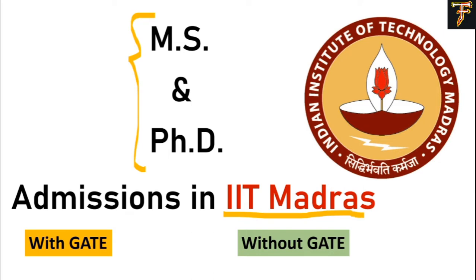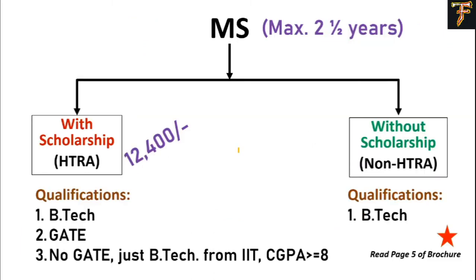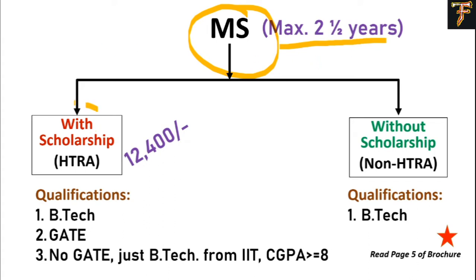Before we go into more details, let's understand what MS is. MS is a Master of Science degree which takes around two to two and a half years. This MS degree is divided into two categories: with HTRA and without HTRA. HTRA stands for Half-Time Research Assistantship, where you will get a scholarship of around 12,400.